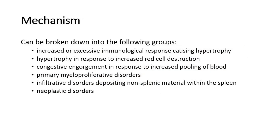For its mechanism, it can be broken down into the following groups: increased or excessive immunological response causing hypertrophy; hypertrophy in response to increased red cell destruction; congestive engorgement in response to increased pooling of blood; primary myeloproliferative disorders; infiltrative disorders depositing non-splenic material within the spleen; or neoplastic disorders.